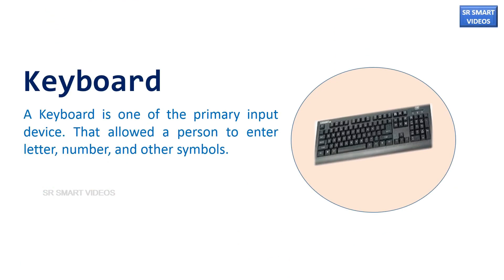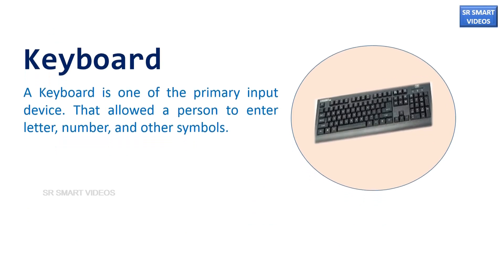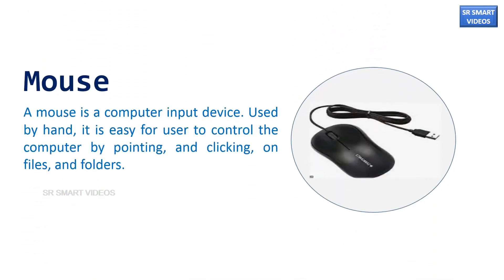A keyboard is one of the primary input devices that allows a person to enter letters, numbers, and other symbols. A mouse is a computer input device used by hand. It is easy for the user to control the computer by pointing and clicking on files and folders.